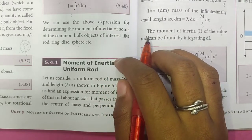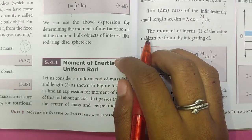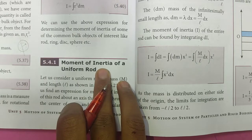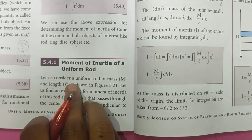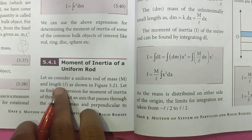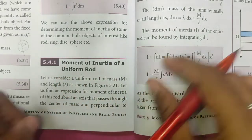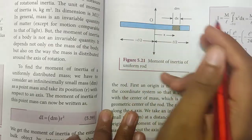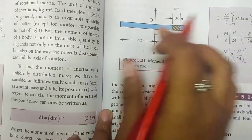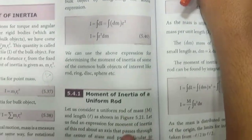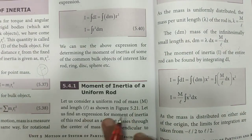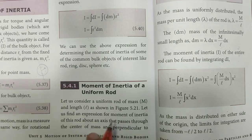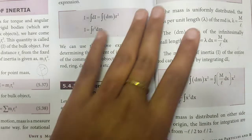Hello everyone. In class 11 physics, unit 5, the topic will be the moment of inertia of a uniform rod. Let us consider a uniform rod of mass M and length L. We will find the expression for moment of inertia of this rod about an axis that passes through the center of mass and perpendicular to the rod.